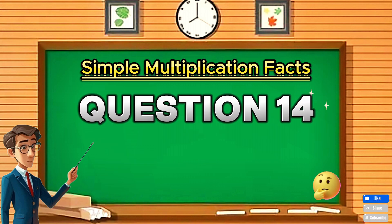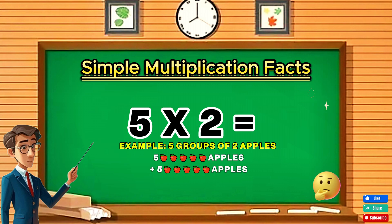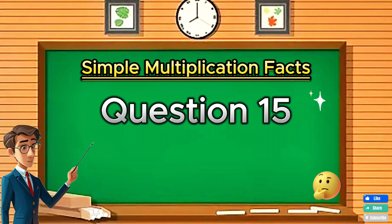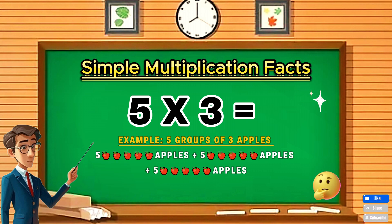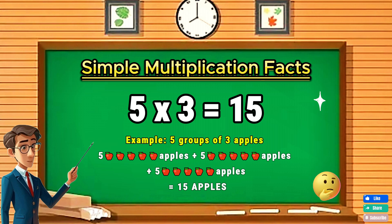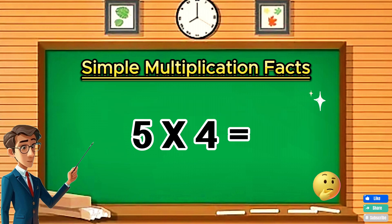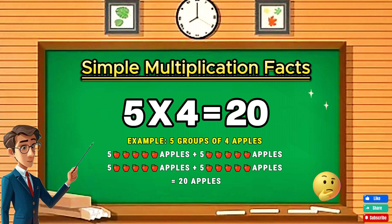Question fourteen: Five times two equals ten. Question fifteen: Five times three equals fifteen. Question sixteen: Five times four equals twenty.